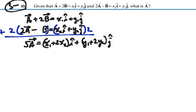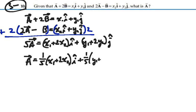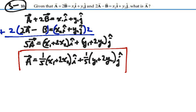So now divide both sides by 5. Vector a equals one-fifth times (x1 plus 2x2) i hat plus one-fifth times (y1 plus 2y2) j hat. So in terms of vectors, that is my vector a.